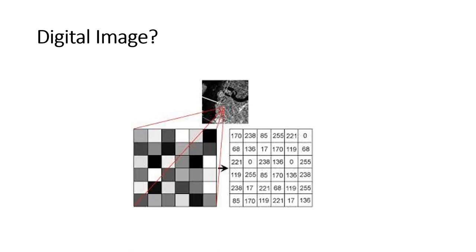Typically in digital image processing, we need to perform some sort of transformation to convert the color image to grayscale, which stores only one matrix — a one-dimensional matrix. Each grid represents the color values depending on the type of image captured.